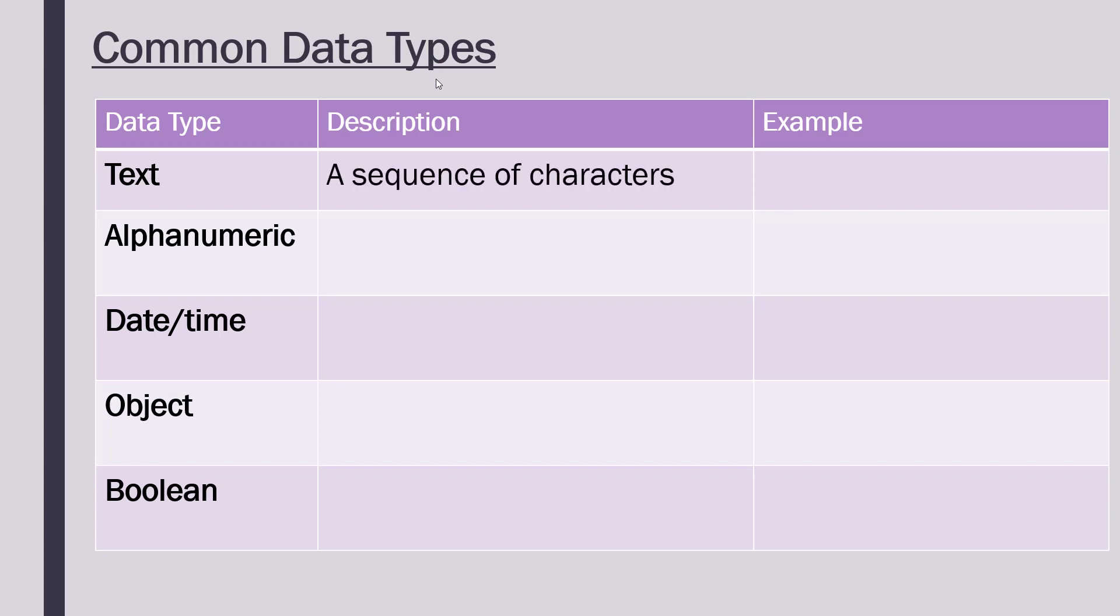First of all, text. Fairly self-explanatory, just a sequence of characters. Characters being letters, numbers, symbols, or space. Space is a character too, so you'd have to store that as well. Alphanumeric is where we have a mixture of letters and numbers. Text can be alphanumeric, but alphanumeric is just a mixture of letters and numbers. For example, a postcode. This is a postcode for Downing Street, a mixture of letters and numbers.